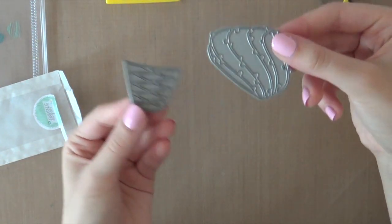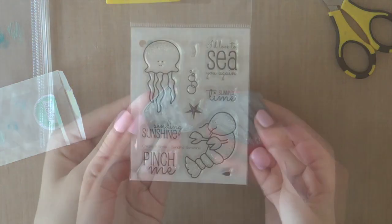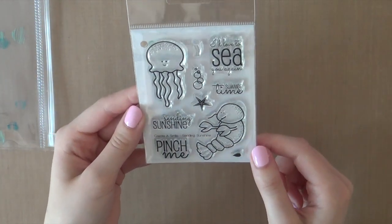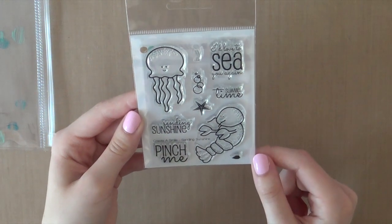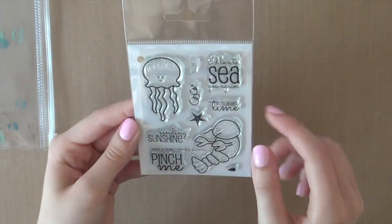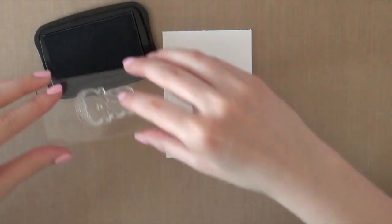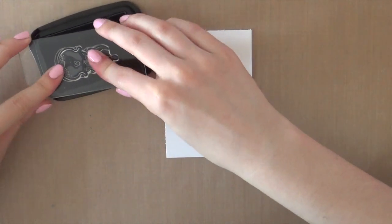The kit also comes with a die. This is an ice cream cone but you could also use it for a cupcake I personally think. And then there's a stamp set and this stamp set has won my heart. I just love that jellyfish and the cute sentiments. So of course I just had to use this jellyfish on today's card.